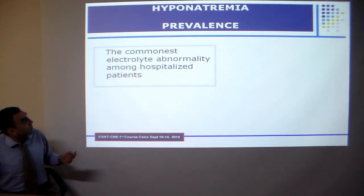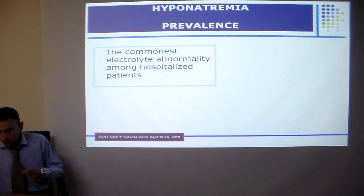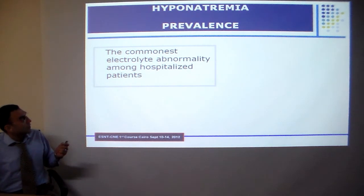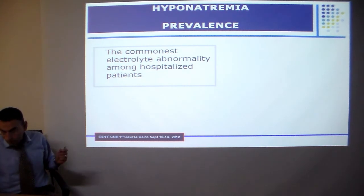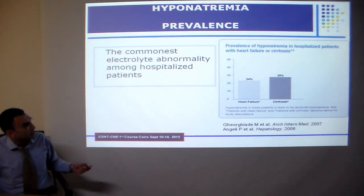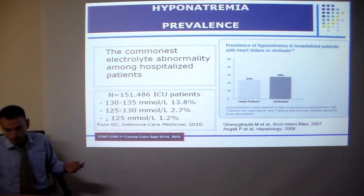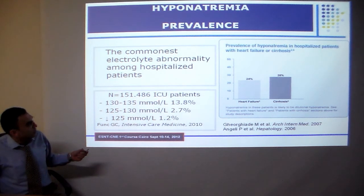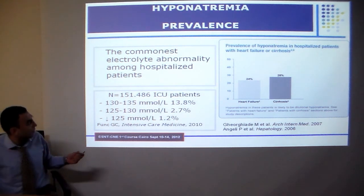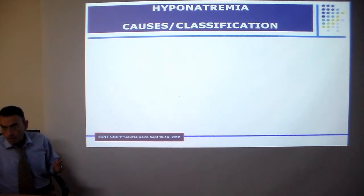Hyponatremia is the commonest electrolyte abnormality among hospitalised patients. Nephrologists are frequently requested to manage patients with hyponatremia in hospital. For example, in two studies, about one quarter of hospitalised heart failure and cirrhotic patients developed hyponatremia, and in another large ICU study, about 15% of patients developed hyponatremia.